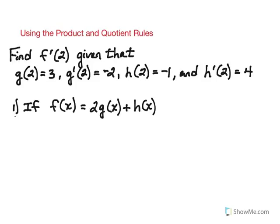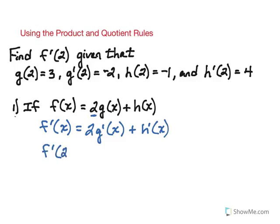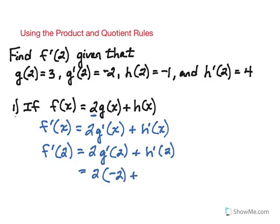First, we find f prime of 2 given that f of x is twice g of x plus h of x. Since 2 is a constant it stays, so f prime of x is 2 times g prime of x plus h prime of x. Evaluating at 2: we get 2 times g prime of 2, which is negative 2, plus h prime of 2, which is 4. So we get 0.